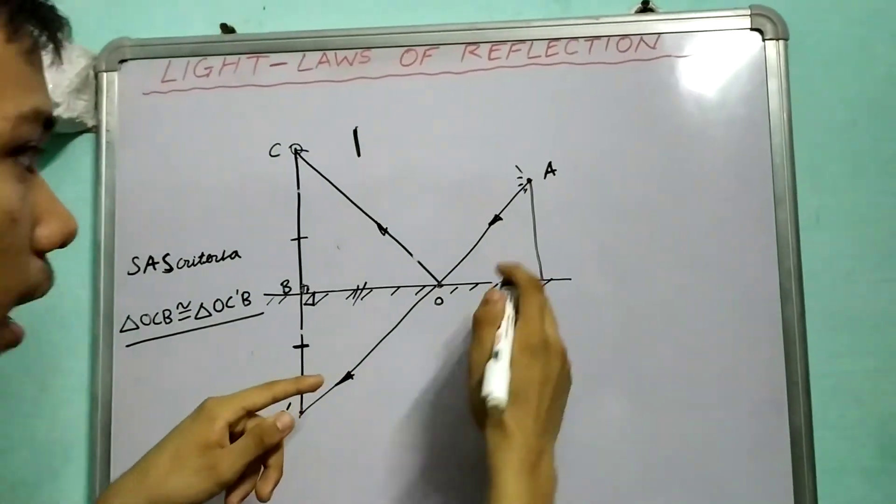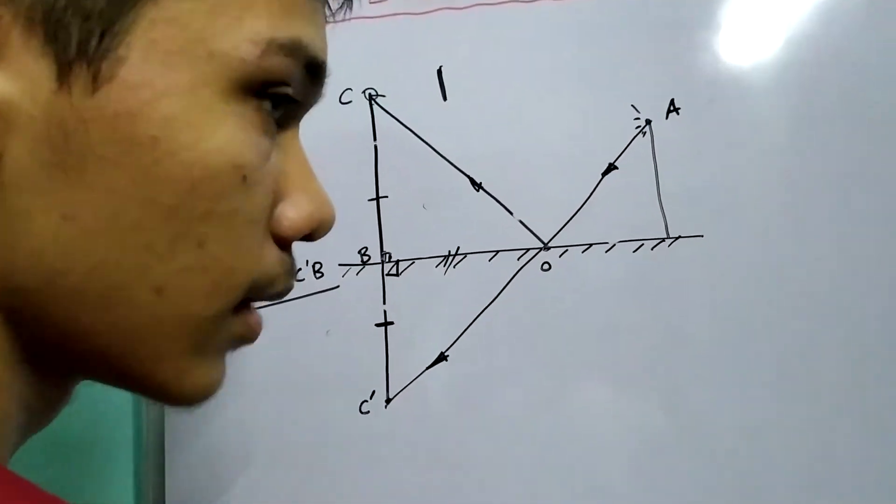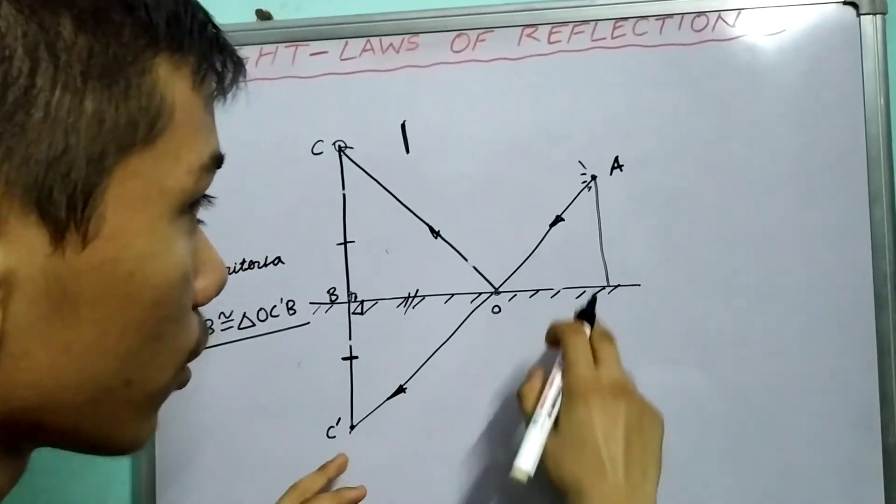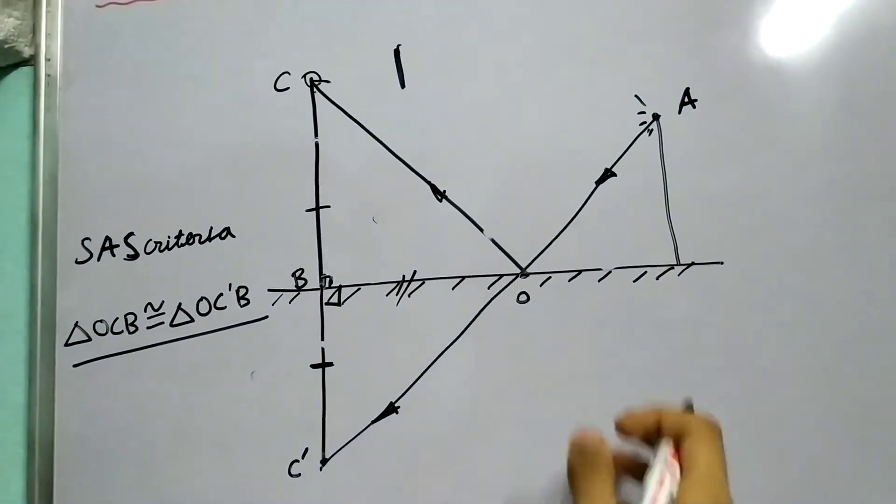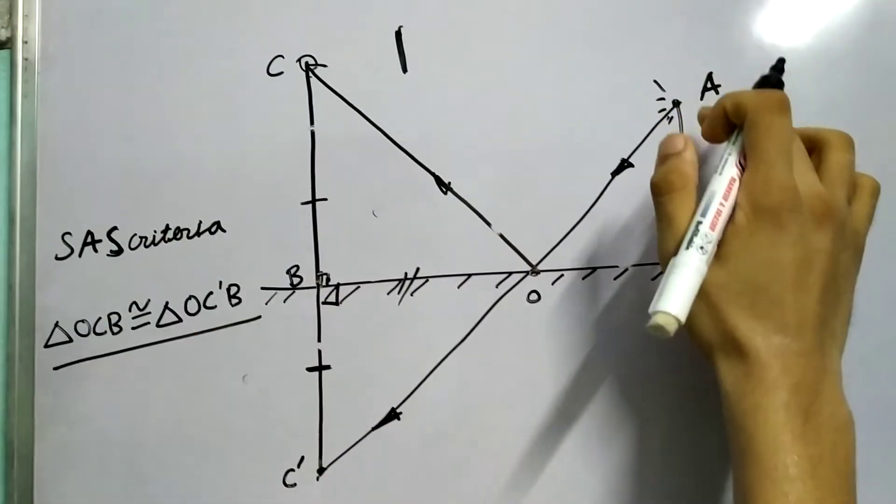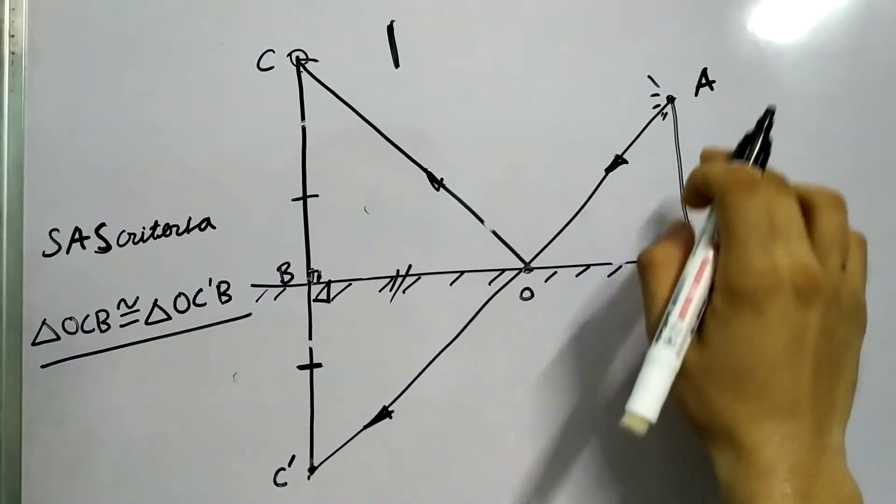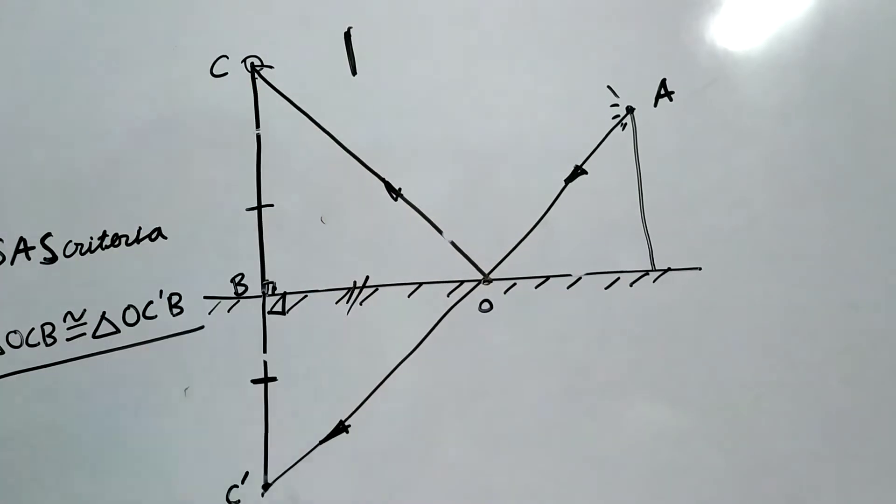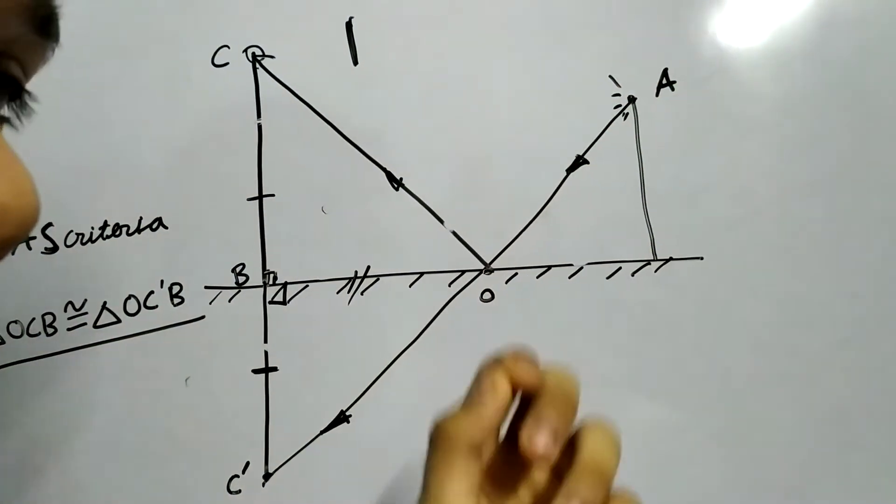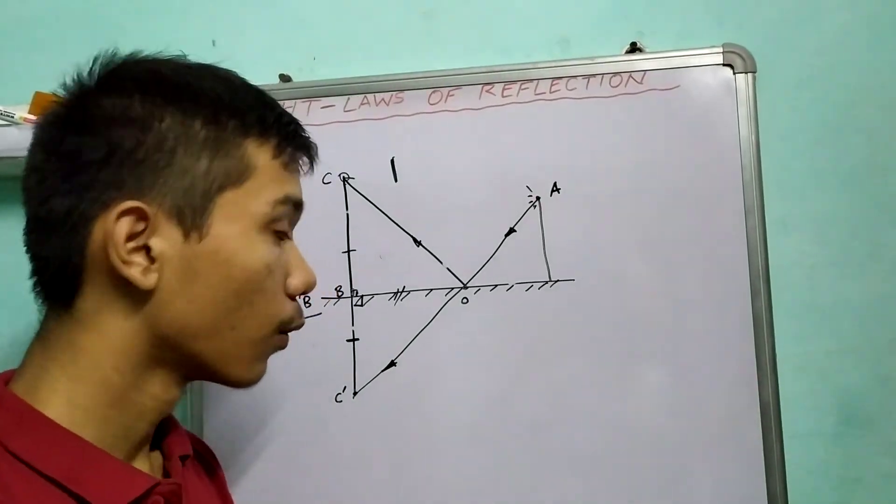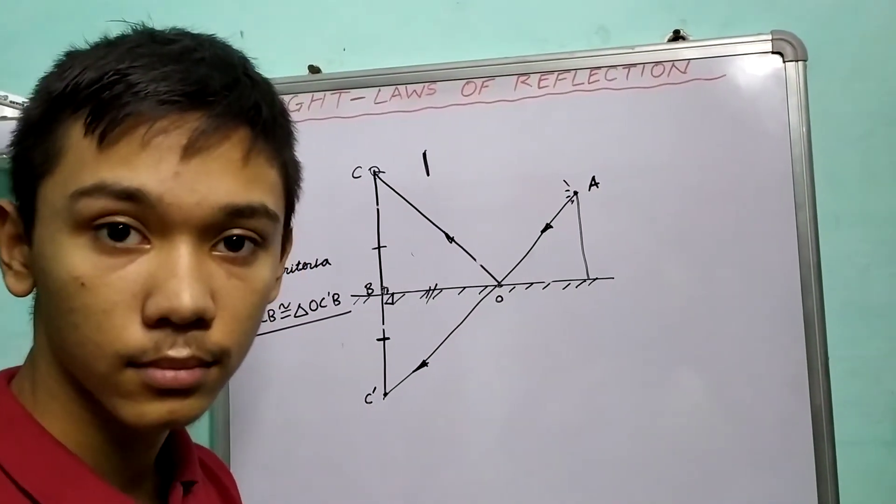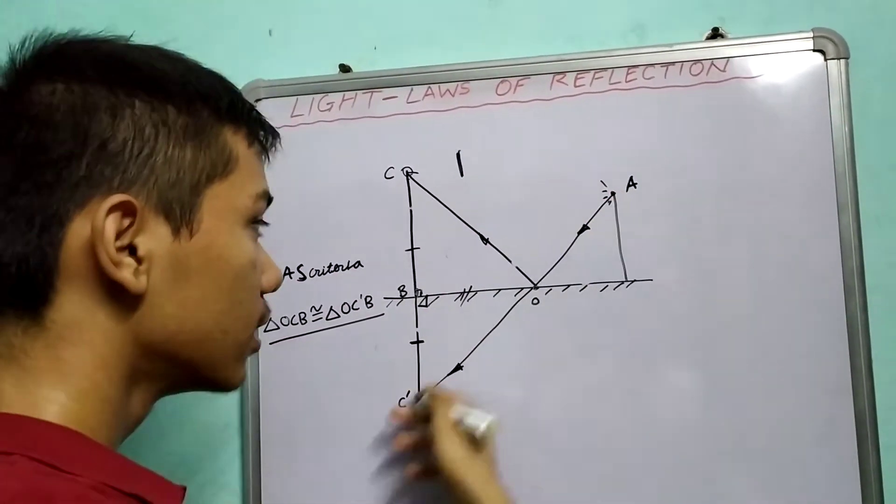Now, see, given two points in the same medium, light wants to travel from A to C dash because we just shown that these two paths, A, O and C dash is equivalent to A, O and C. Now, if light is traveling from one point to another, in the same medium, which path will it take? A straight line, right? Light will take a straight line.